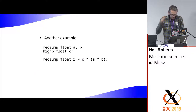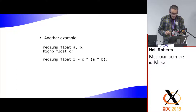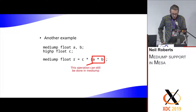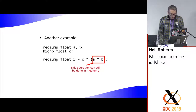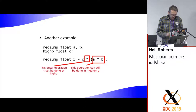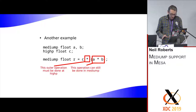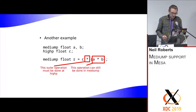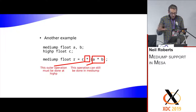Here's another example where we're doing A times B with mediump variables and then multiplying by another variable. The inner multiplication has both operands in mediump, so it can be done in mediump. But for the outer multiplication, one operand is highp, so that multiplication needs to be done in highp. This highlights that it's the individual operations that precision determines, not the whole expression.